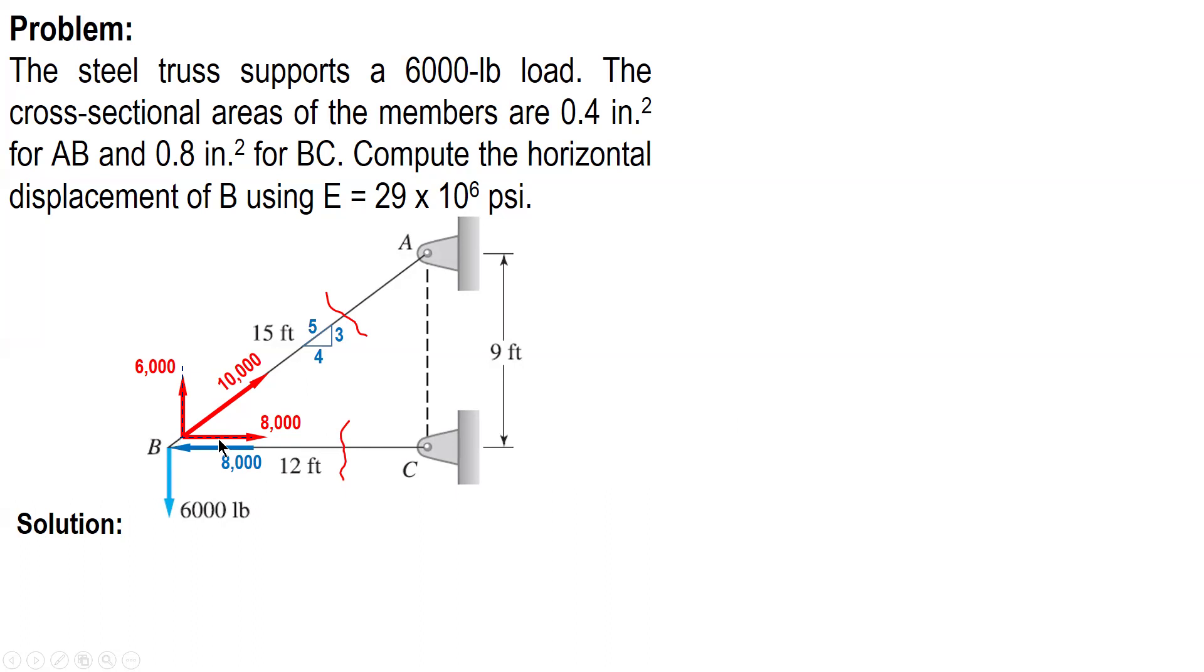After this, we can solve for deformation. For AB, it's elongation since tensile. PL over AE, the force is in pounds. The length is in feet, so we will convert the unit to inches. Feet times 12 to make it inches. Area is given for BA, it's 0.4. And then E, 29 times 10 raised to 6. So we have the force length, 15 times conversion factor. We have 9 over 58.